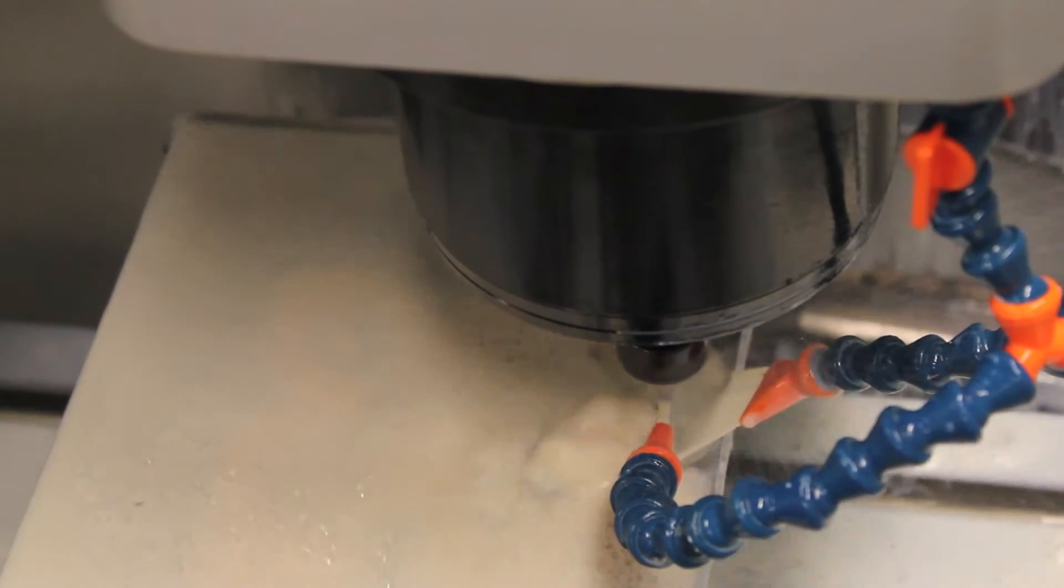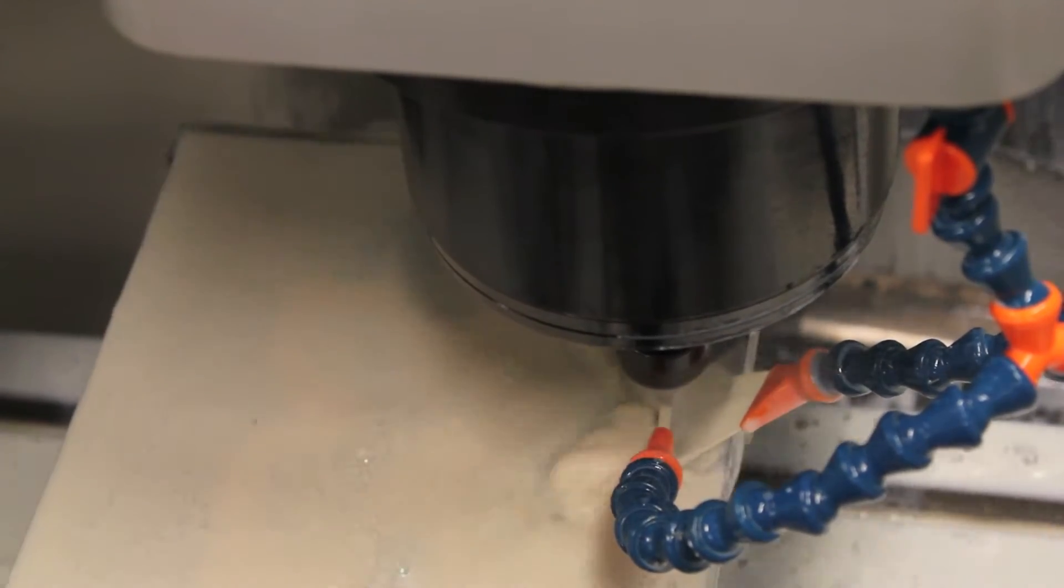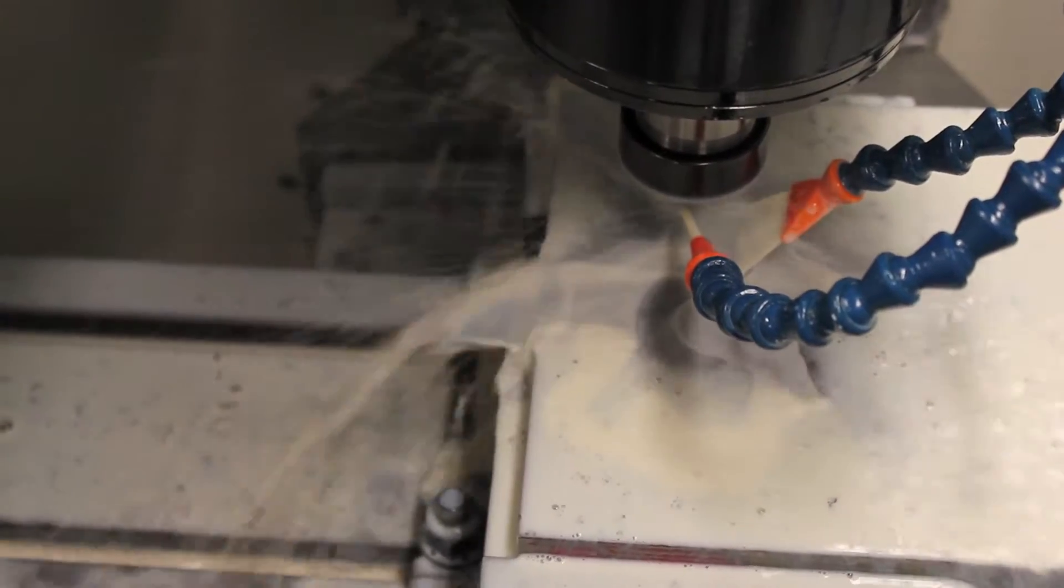First, you can see we did roughing on the steel piece with a large end mill, and then we went in and cut out a lot of the pockets and surfaces on the backside.